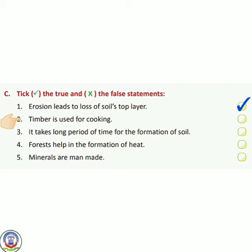Number 2 — timber is used for cooking. हमें जो forest timber मिलता है वो हम cooking यानि खाना बनाने के लिए इस्तेमाल करते हैं। Yes, so we will put a tick.